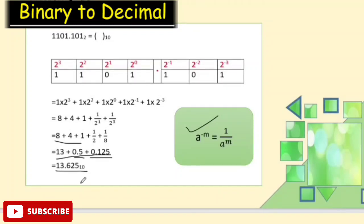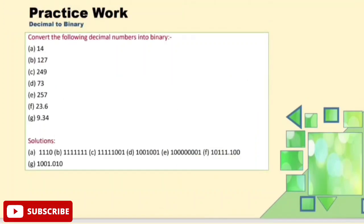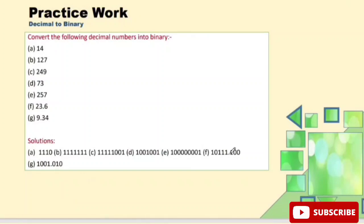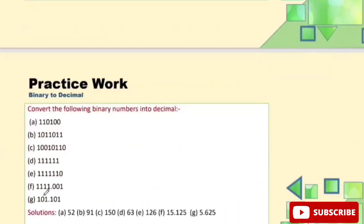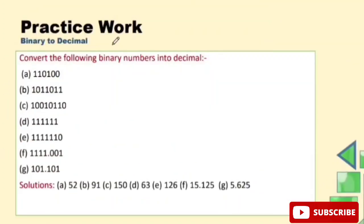To summarise: for binary to decimal conversion, digits to the right of the decimal point have negative positional powers, and digits to the left have positive powers. I encourage you to practice these conversions. Try to convert the given examples and check your answers.